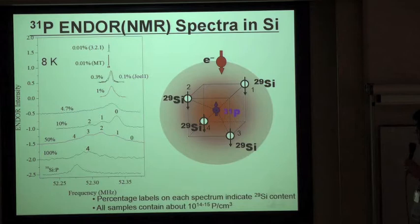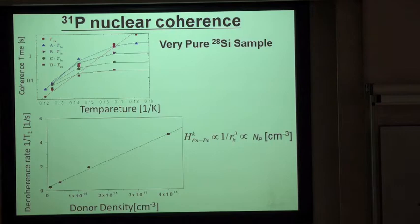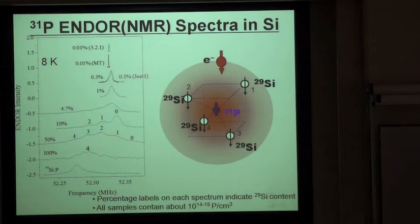Moving on to the second part of my talk: even though nuclear spin decoherence is limited by electron-electron interactions, the nuclear spin decoherence time is close to 3 seconds — which is very long.